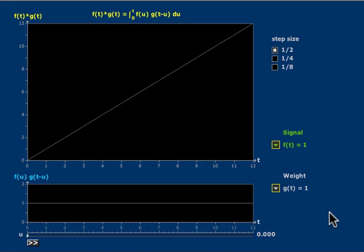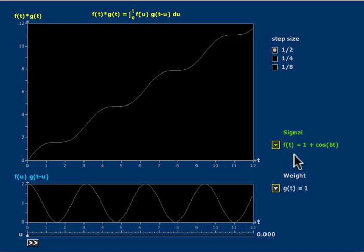I'll set it up to model what we're looking at. The signal, f(t), is the rate of input of phosphate into the lake, and I will model it by the menu item f(t) = 1 + cos(bt). You can see it drawn in the lower graphing window here.